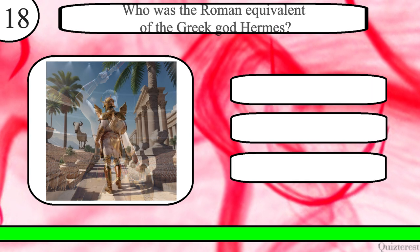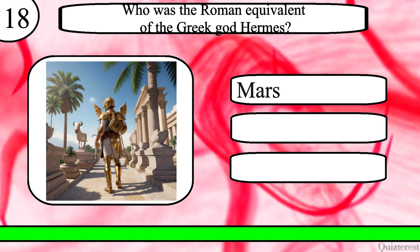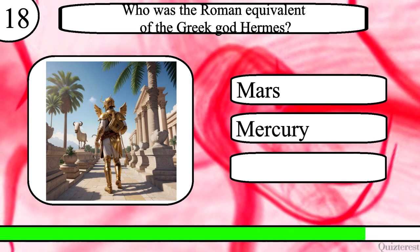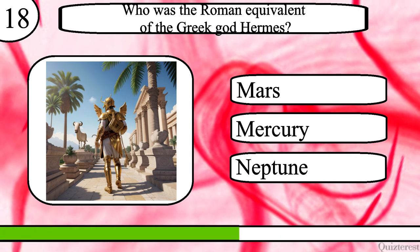Question 18. Who was the Roman equivalent of the Greek god Hermes? Mars, Mercury or Neptune?